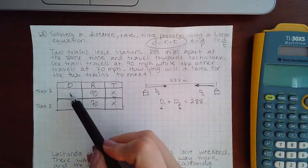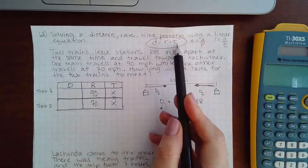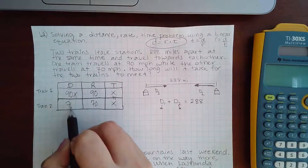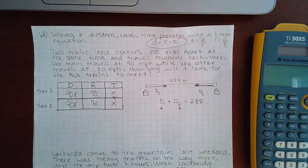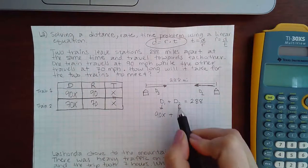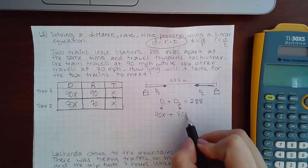Now if I want to figure out what goes in the box for D, I would just do the rate times the time. So here I get 90X, here I get 70X. And now I have an expression for the time for the first train is 90X, and I have an expression for the time for the second train, which is 70X.